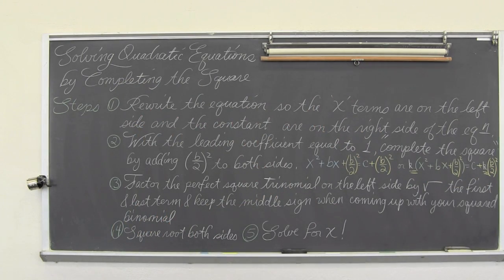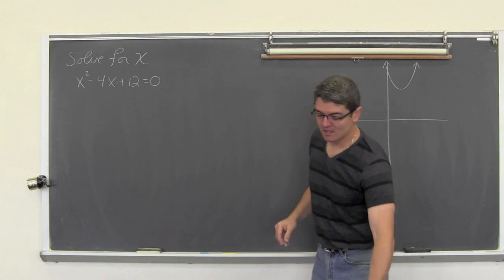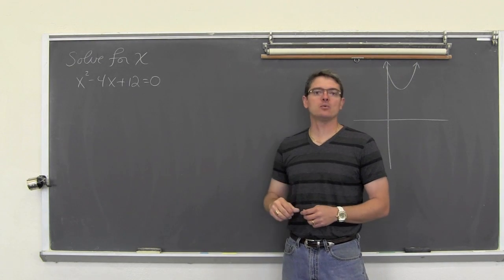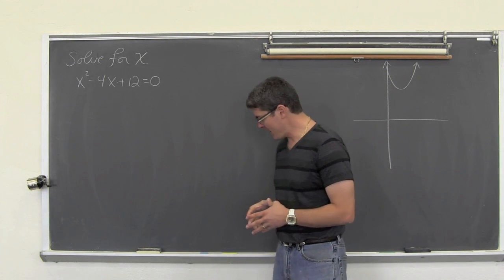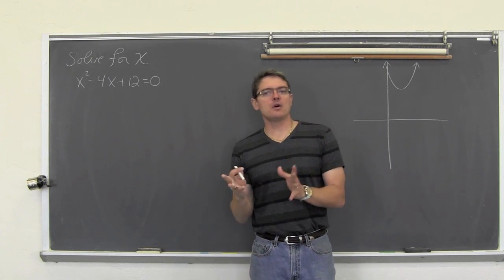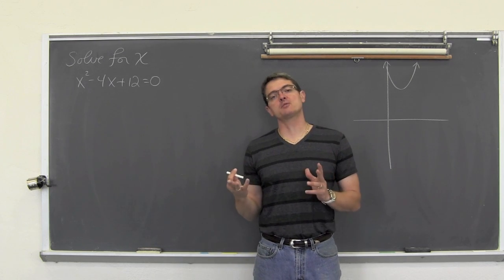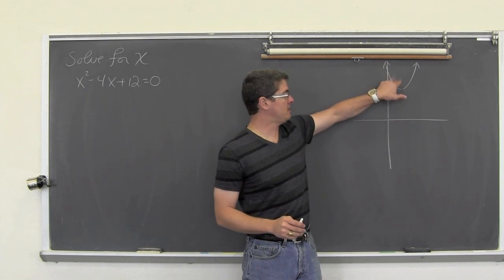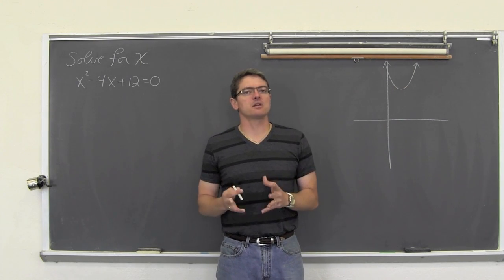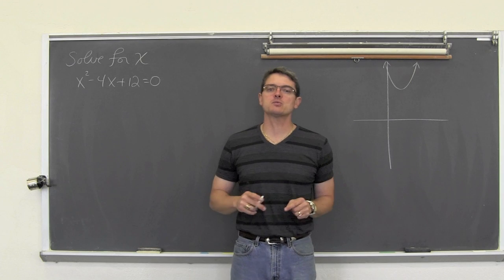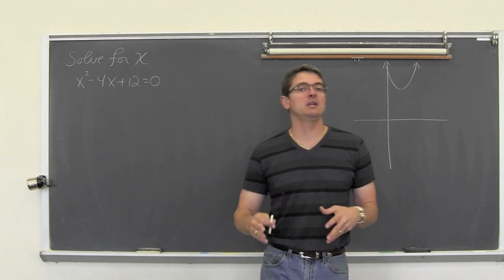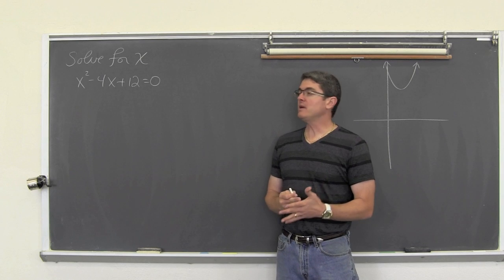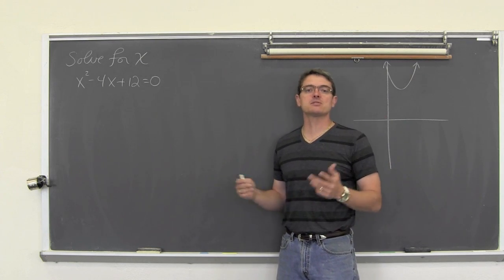First example: x² − 4x + 12 = 0. The graph of this equation has no x-intercept. So when we go to solve this with completing the square, factoring, or any method, we are not going to get an answer, because there is no x-intercept and thus no solution.